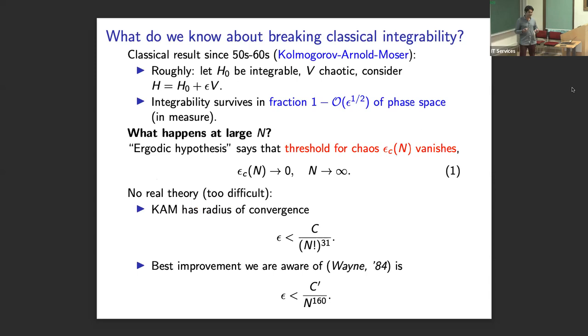So again, it's no surprise to anyone in this room that classically, this is in principle well understood. There's this Kolmogorov-Arnold-Moser theorem from the 50s and 60s, saying that if we have an integrable Hamiltonian and perturb it by a chaotic Hamiltonian, integrability will survive in some fraction of phase space that is relatively large for a relatively small perturbation. And this has been known for a long time. But what actually happens at large N has not received much attention, partly because it's just such a difficult problem.